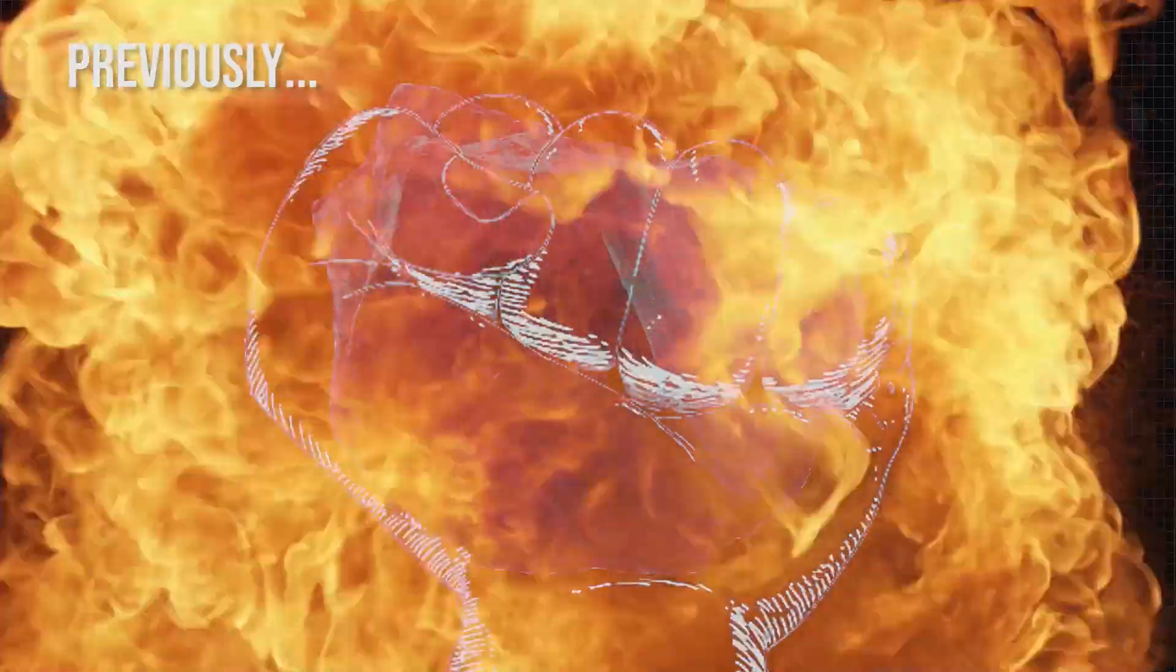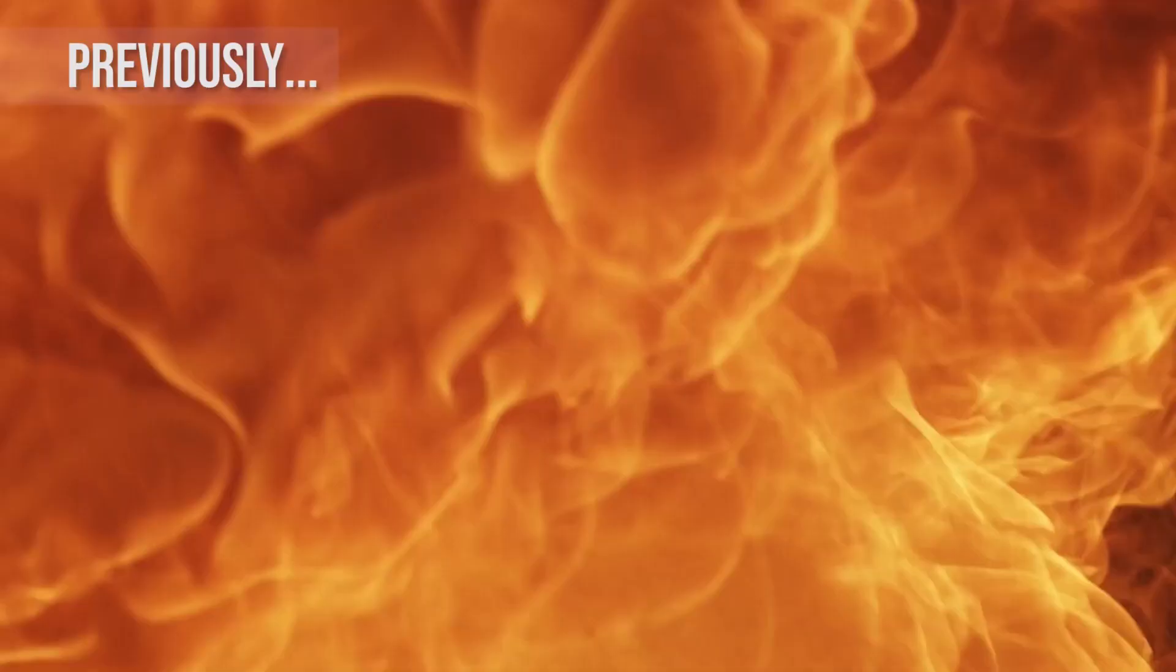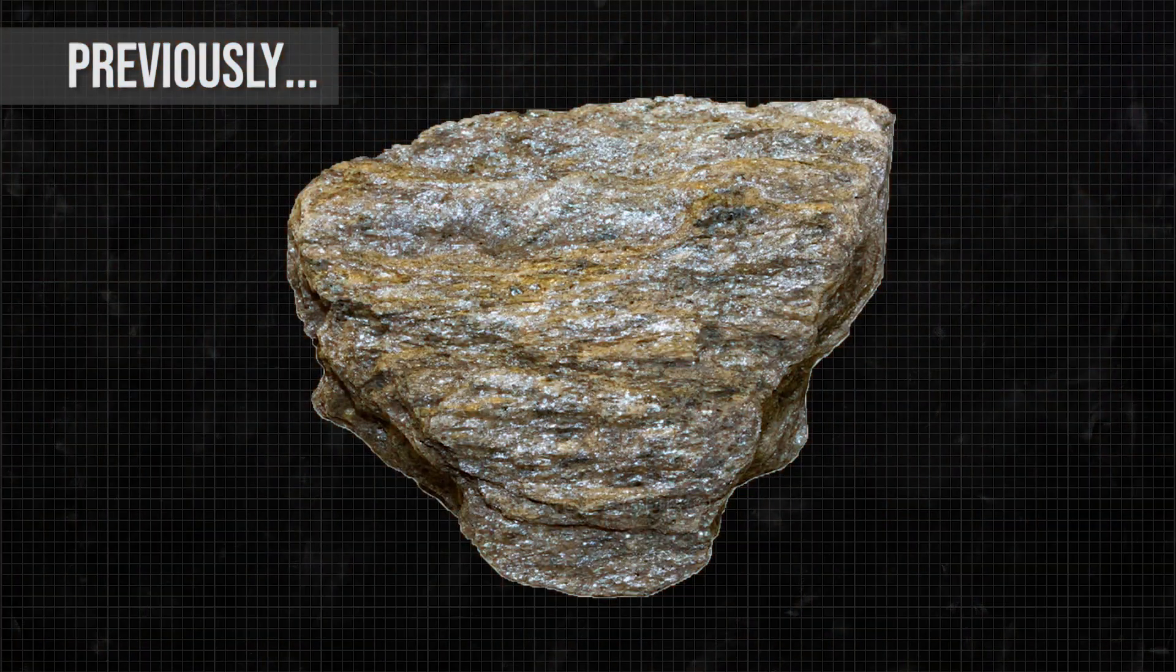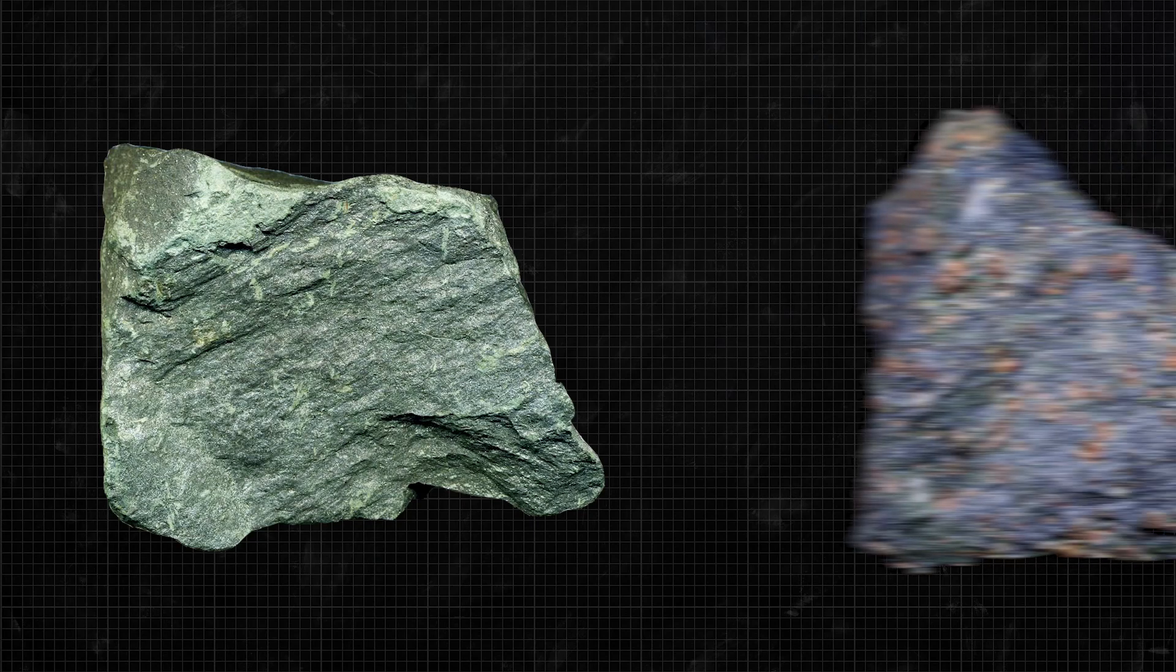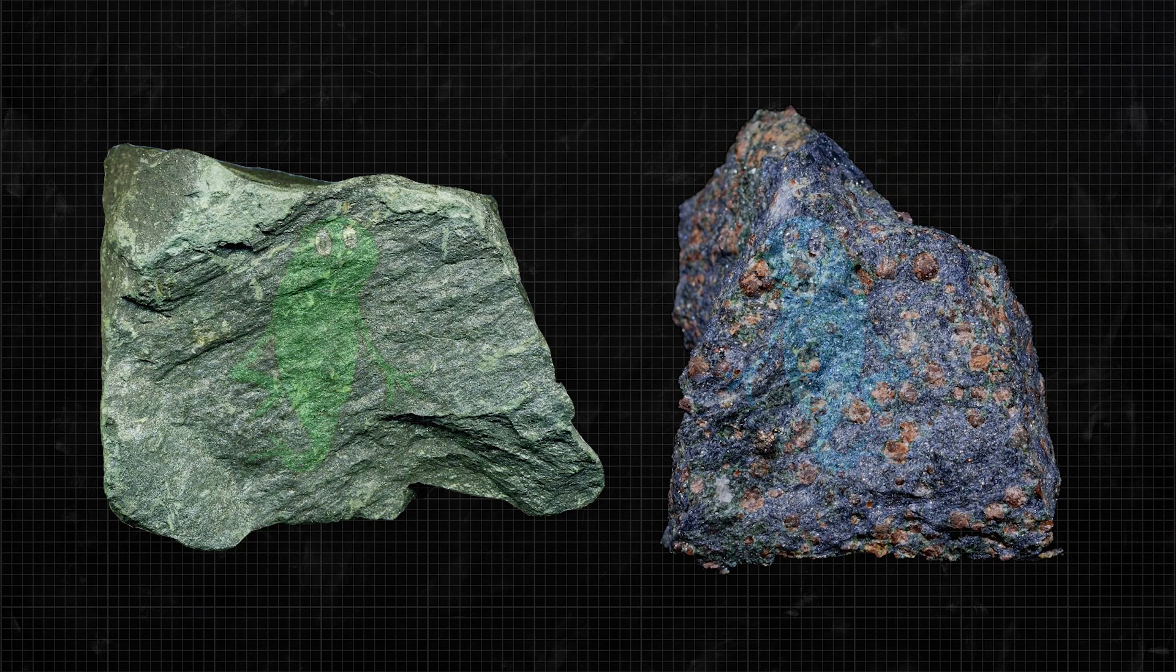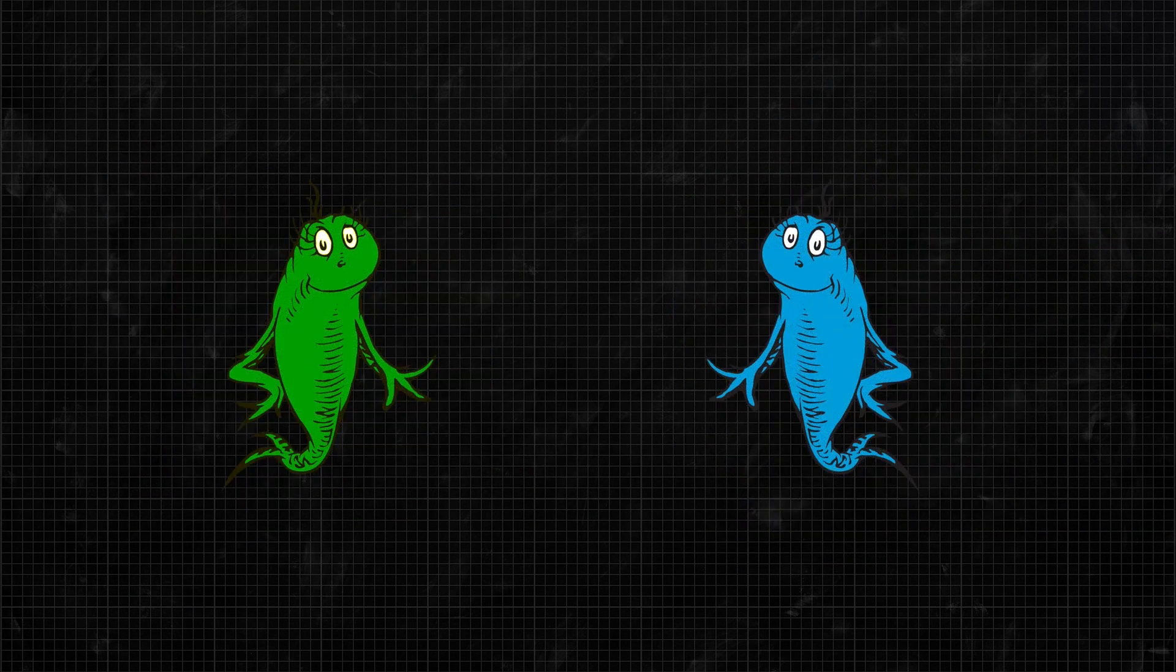We know generally how metamorphic rocks are created, but there are a lot of different types and they have some confusing and colorful names like greenschist and blueschist. I mean, it almost sounds like the beginning of a Dr. Seuss book or something.